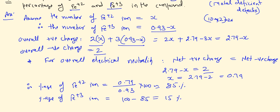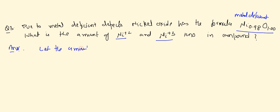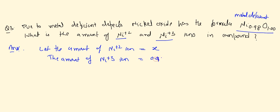The next numerical is similar — nickel oxide with metal deficient defects. We need to find how many Ni²⁺ ions have changed to Ni³⁺ ions. Repeating the same process: let amount of Ni²⁺ ions = x, therefore amount of Ni³⁺ ions = 0.98 − x.